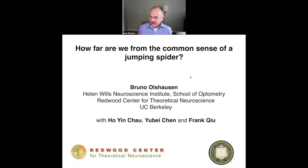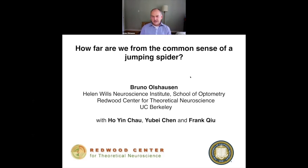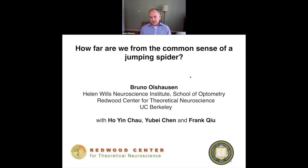Thanks Leila. Good to see everybody. What I'd like to turn to here is thinking about common sense reasoning further back in the evolutionary chain — particularly in jumping spiders — and then tell you about work we're doing on understanding the neural computations that underlie our ability to do geometric reasoning. This is work with students Hou Yunxiao, Yubei Chen, and Frank Qi.